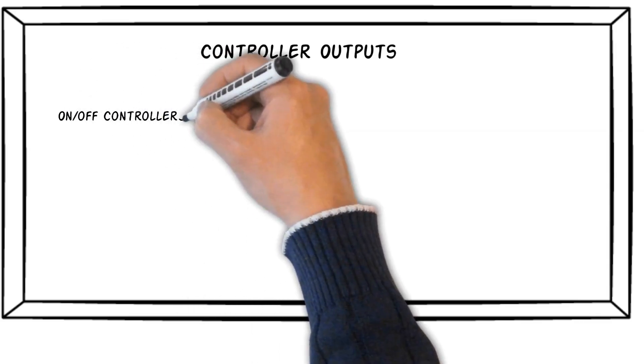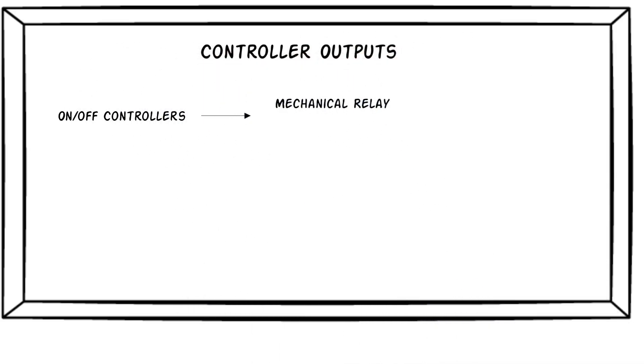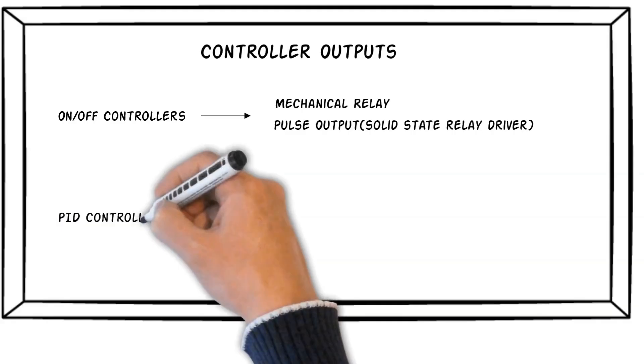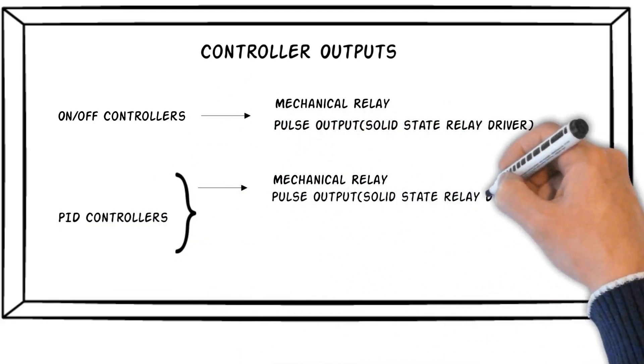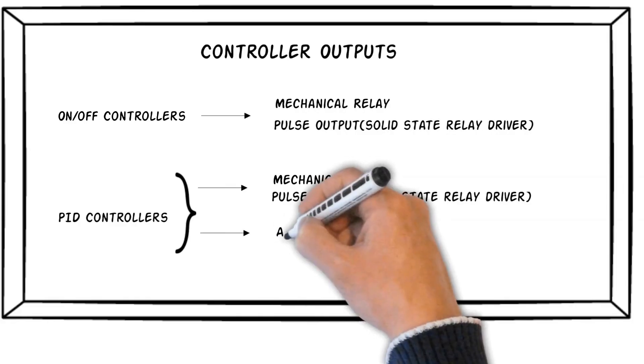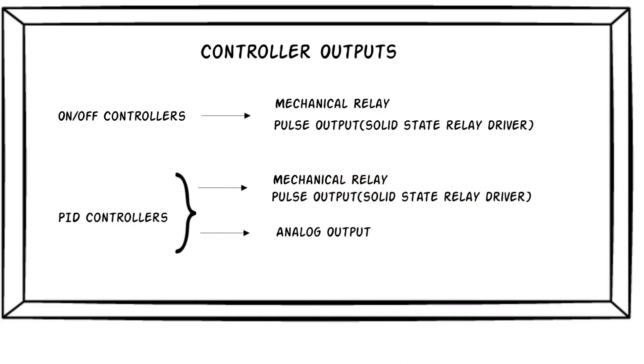On-off controllers have either a mechanical relay or a pulse output. The pulse output is sometimes called a solid-state relay driver because it's used to control an external solid-state relay. PID controllers are also available with relay and pulse outputs, but they may also have an analog output, which is typically 4 to 20 milliamps, 0 to 5 volts DC, or 0 to 10 volts DC.